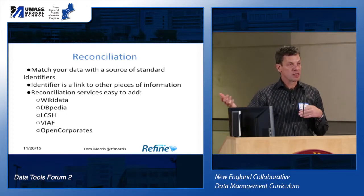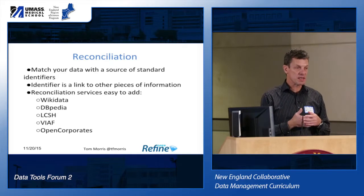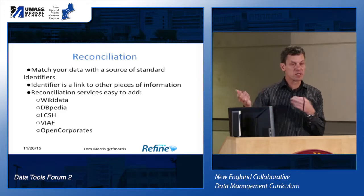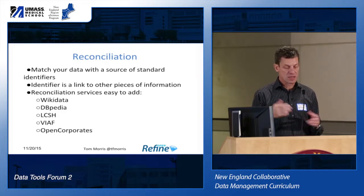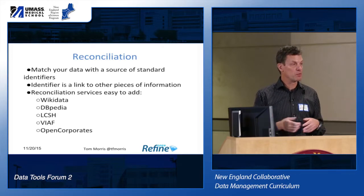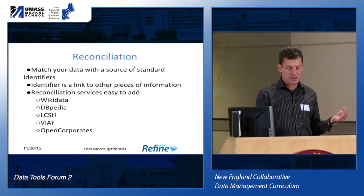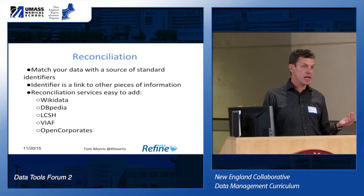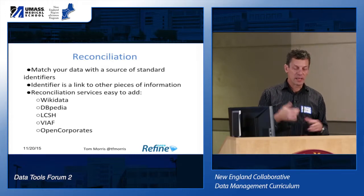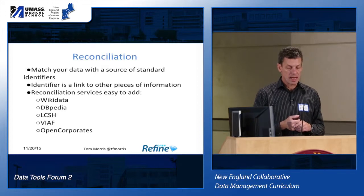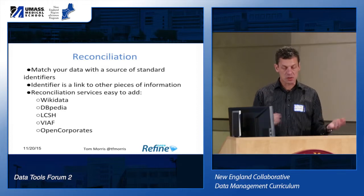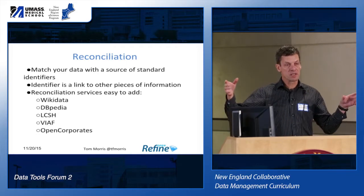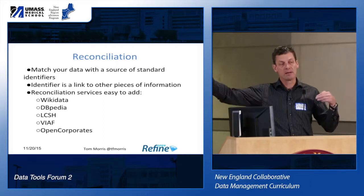Before you move on to the analysis phase, another thing you might want to do as part of the import process is combine a couple of data sets together. There's something called reconciliation services — a couple are included, and a bunch more are available that people have written. Open Corporates if you're reconciling against organization names, and Wikidata, a new Wikimedia-based online data service, has a reconciliation service as well. Once you have things matched up with those databases, you can extract additional information and add more columns.